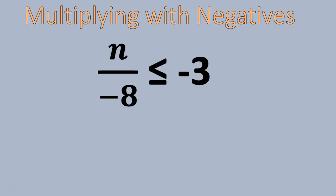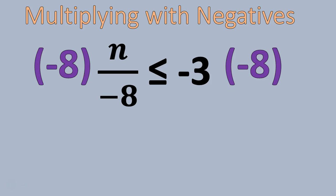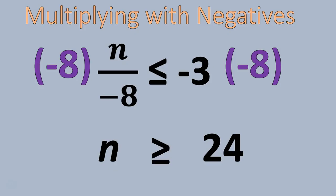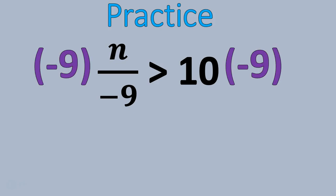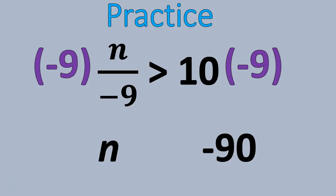Here's one more example: n divided by negative eight is less than or equal to negative three. To solve this, multiply both sides by negative eight. That gets n by itself on the left and positive 24 on the right, and the symbol changes from less than or equal to, to greater than or equal to. Now let's practice: n divided by negative nine is greater than positive ten. Solve that and switch the inequality sign. Multiplying both sides by negative nine leaves n on the left and negative 90 on the right — and we switch the sign.